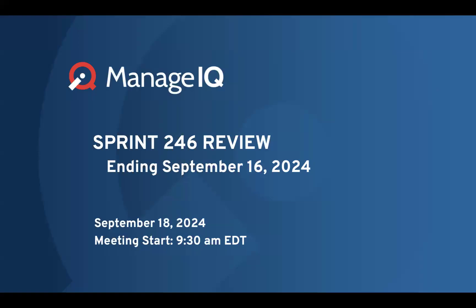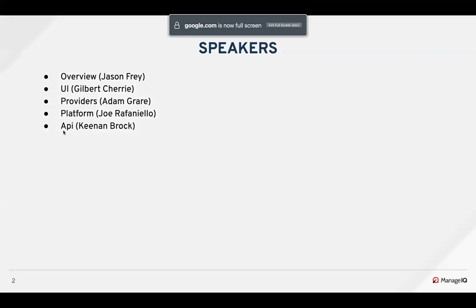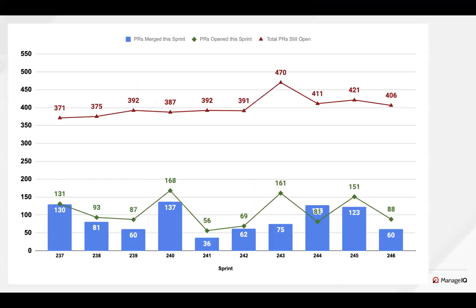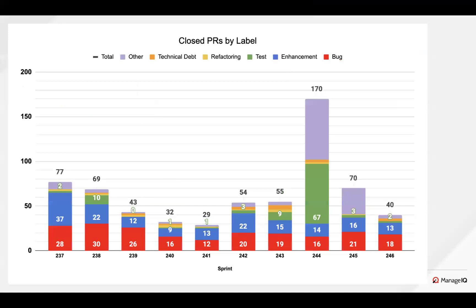Hello everyone, and welcome to the Sprint 246 review. This was a normal two-week sprint. Let's get started. I'll start with the overview. Gilbert's out right now, so I'll be taking on the UI. Adam on providers, Joe on the platform, and Kenan on the API. This is a pretty light sprint, but not too bad. We had 60 PRs merged this sprint, pretty evenly spaced between bugs and enhancements.